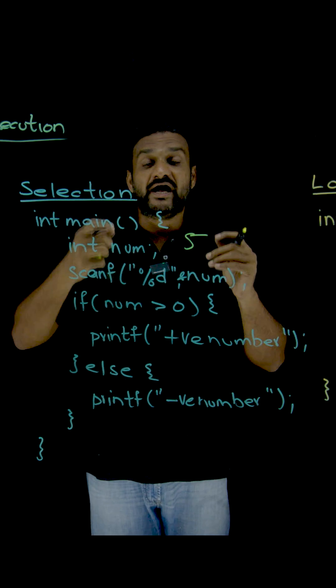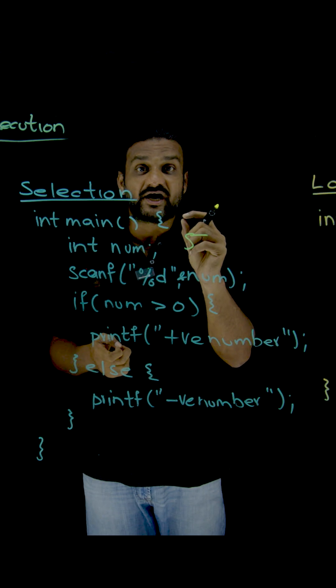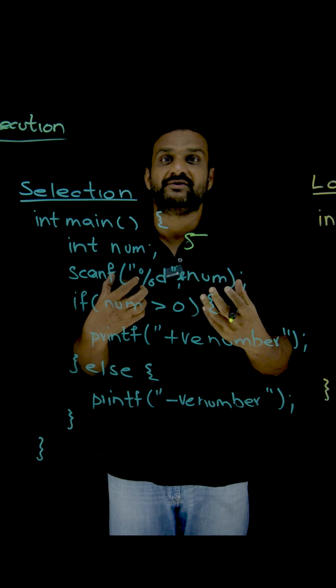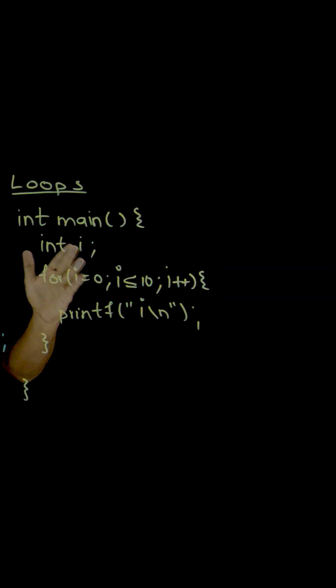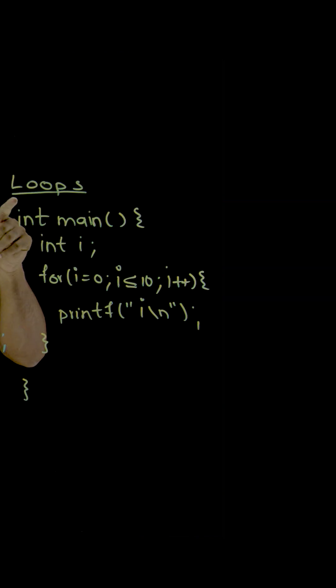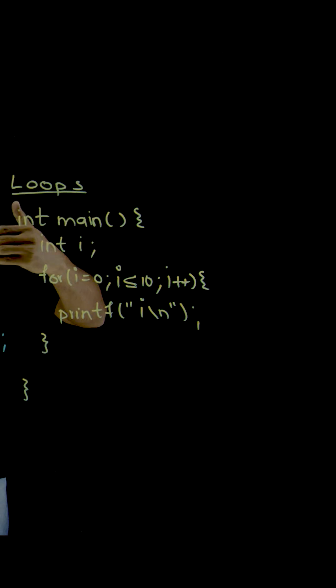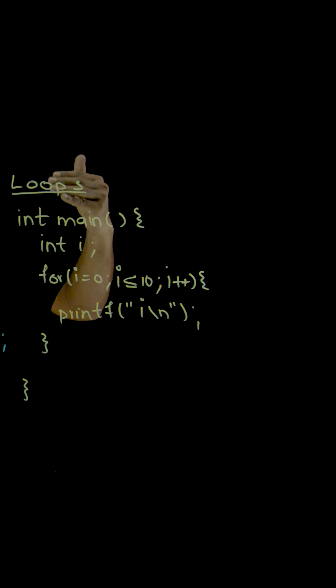This is where the concept of intelligence came into the programming language, where our programs are going to make a decision from the choices that are available. The other concept is loops. Now what happens here is some lines of code are getting executed multiple times, more than one time, based upon the requirement.